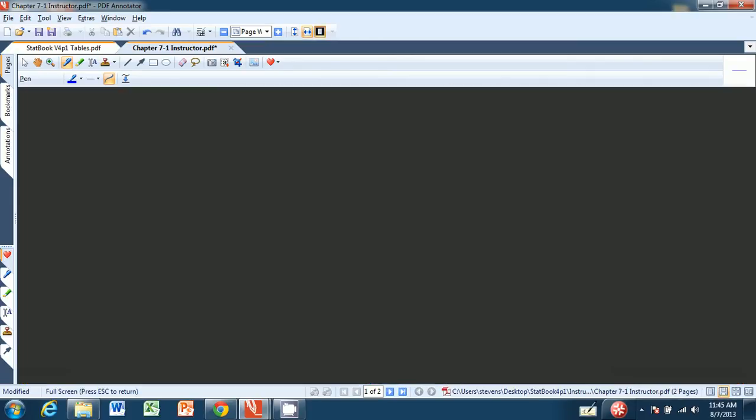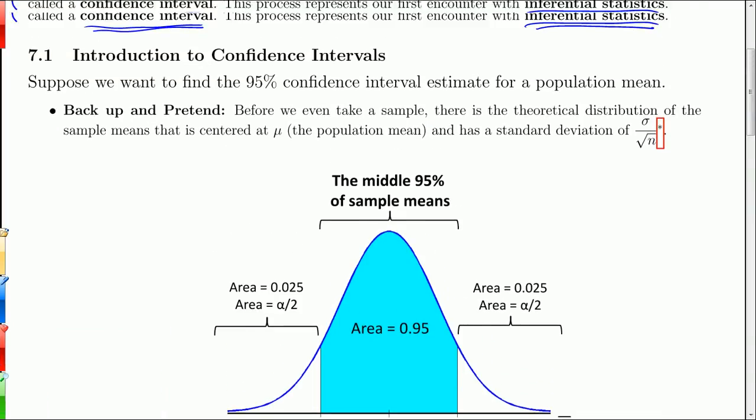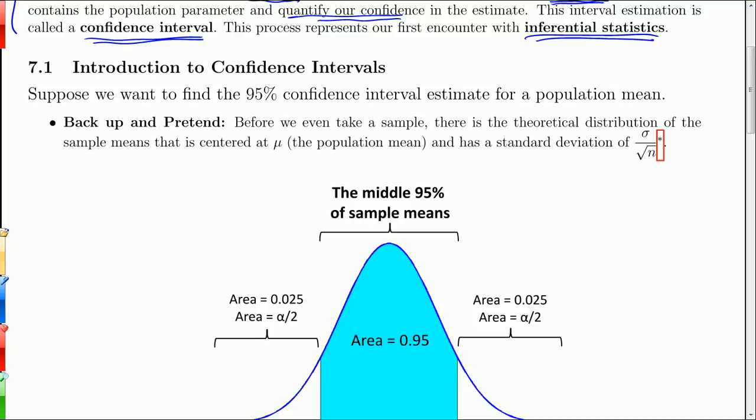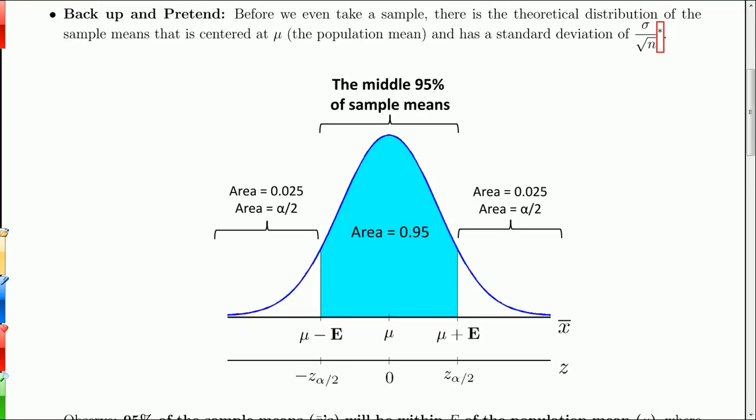And I'm going to switch into full screen mode here. Okay, so suppose, and some of these terms might not be immediately obvious what they are, but I'll build up the material as we go along. But suppose we want a 95% confidence interval for a population mean. So we're going to try to create an interval in which we think the population mean lies, and we want to be 95% confident that that is the case.